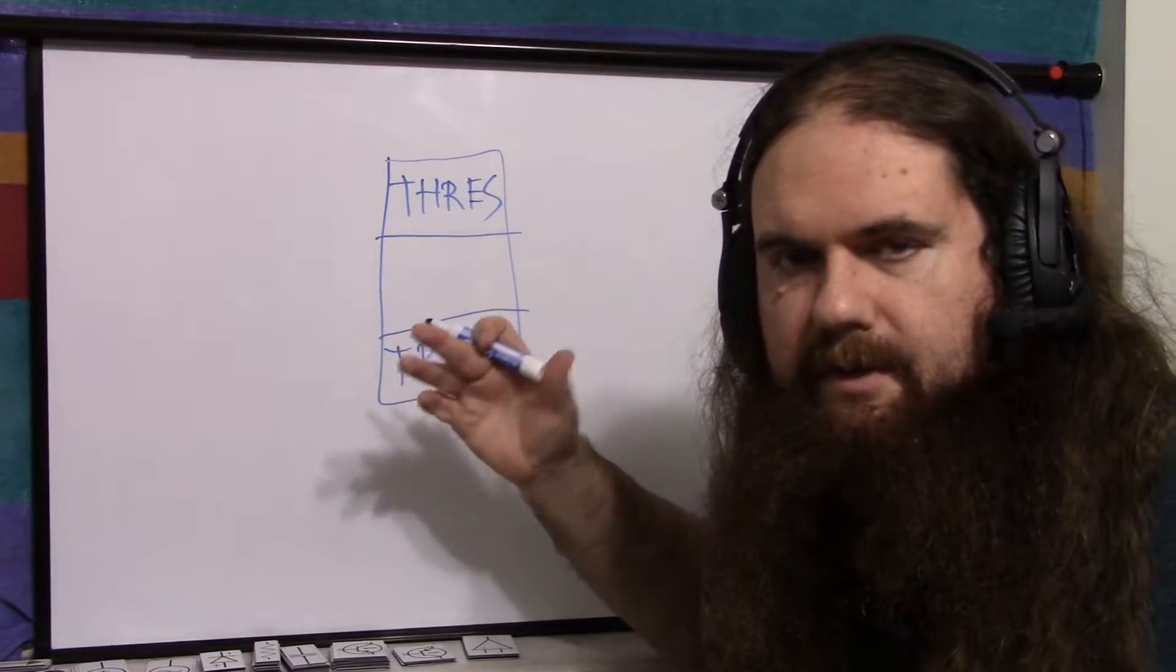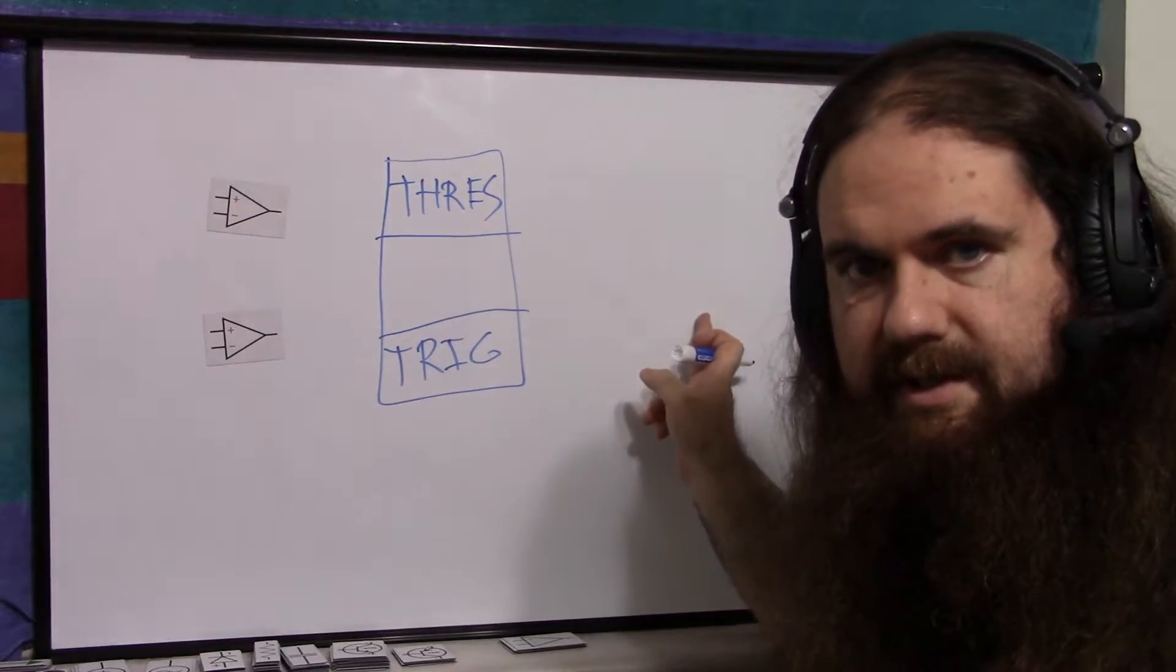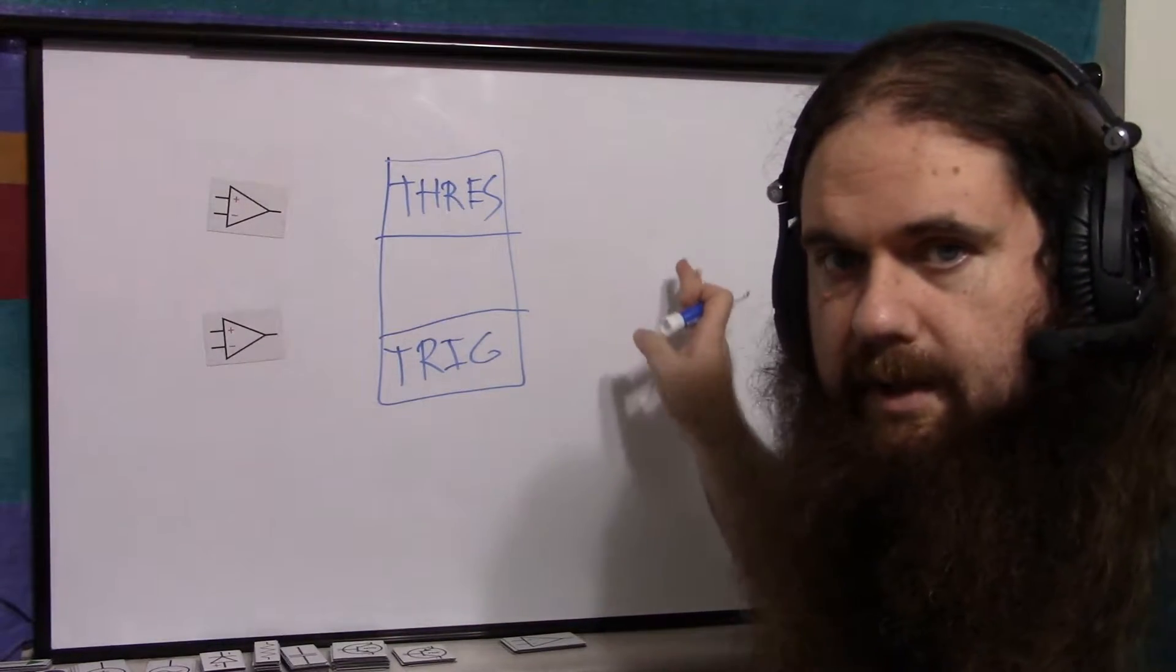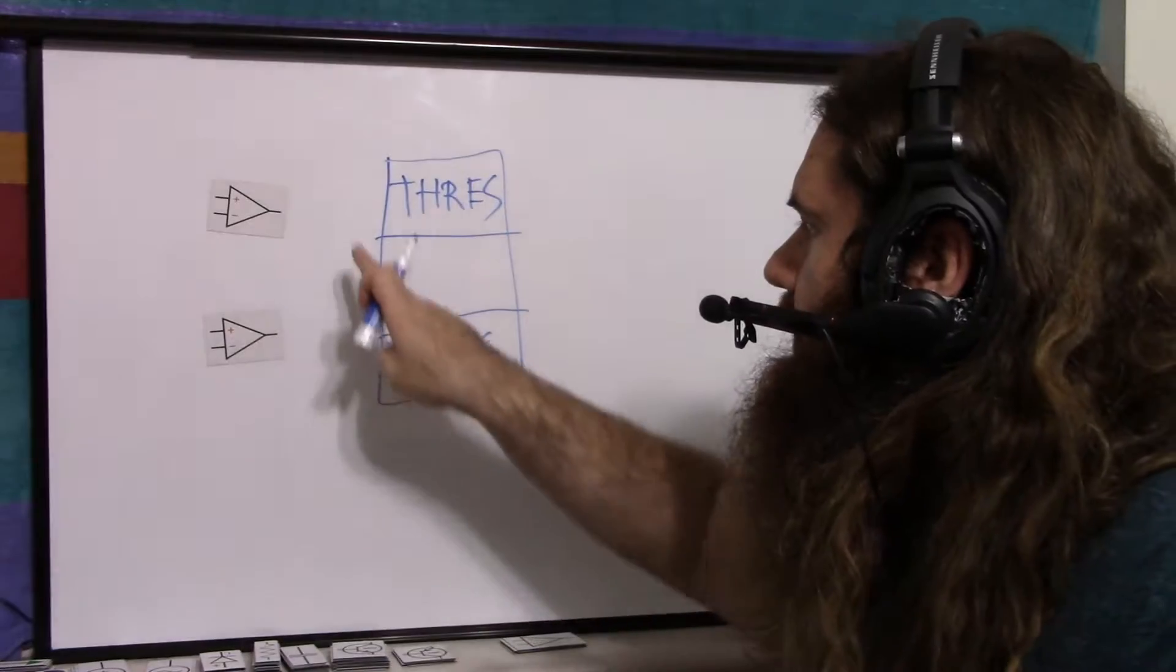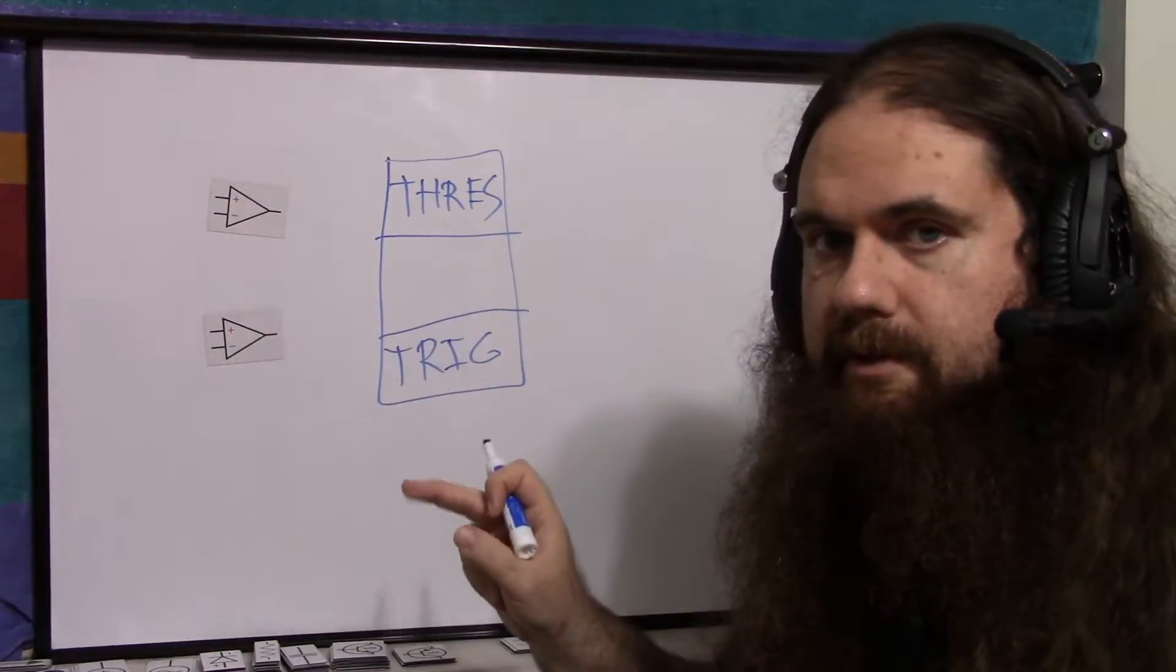The 555 timer has the threshold and trigger pins, and it uses the internal comparators to set a flip-flop, or a latch, really. And that's the output. So when the voltage goes below trigger, it turns on. When it goes above threshold, it turns off.